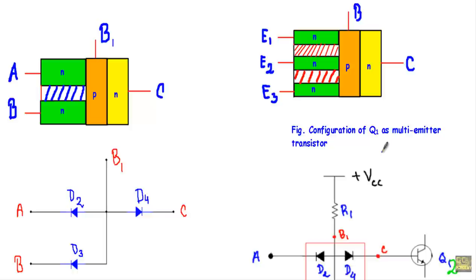To understand the diode equivalent circuit, first understand the structure of a multi-emitter transistor. This is the structure of a three-input or three-emitter multi-emitter transistor. The N-type semiconductor represents the collector terminal, the P-type represents the base terminal, and the emitter section has three N-type semiconductors. We deposit an N-type semiconductor for emitter terminal 1, then a separation layer, another N-type layer for emitter terminal 2, another separation layer, and a third N-type layer — giving us three emitter terminals.